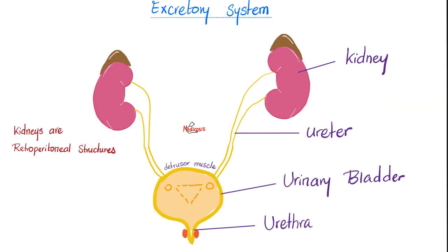The excretory system includes kidneys, ureters, urinary bladder, and urethra with the sphincters. The name of the muscle in the wall of the urinary bladder is the detrusor muscle. Parasympathetic will help it contract, but sympathetic will help the detrusor muscle relax.